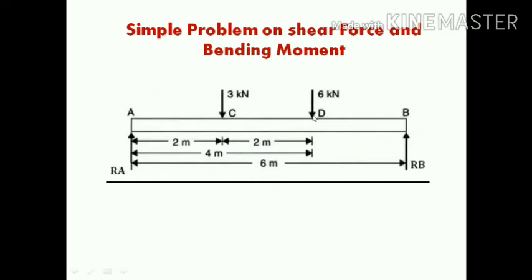From the geometry, the distance between point D and point B is equal to 6 minus 4, which equals 2 meters. Now let's see how we can draw the shear force and bending moment diagram.